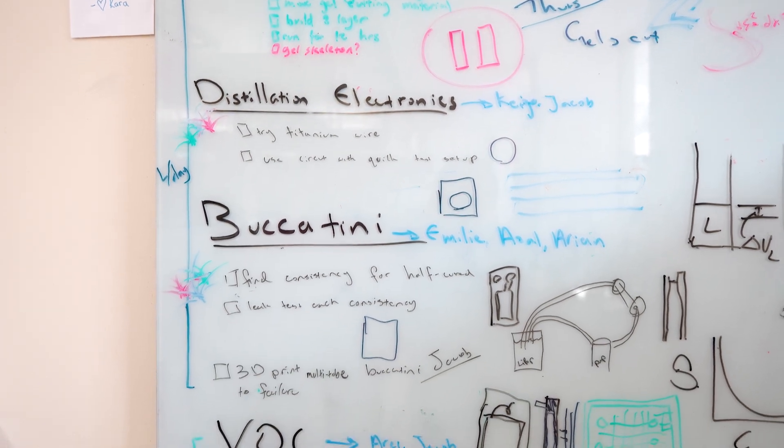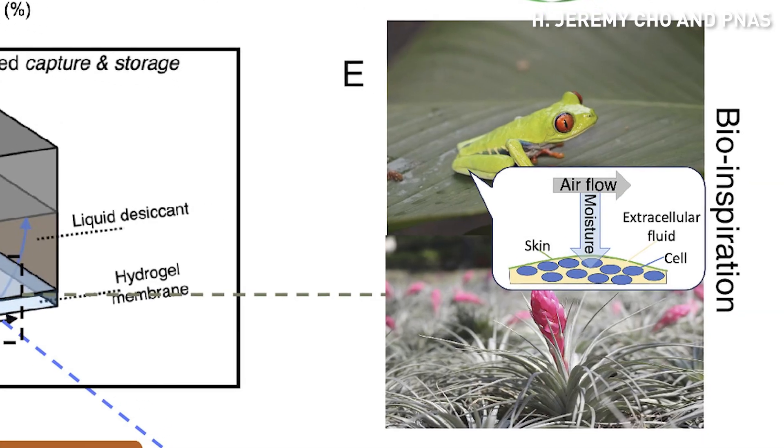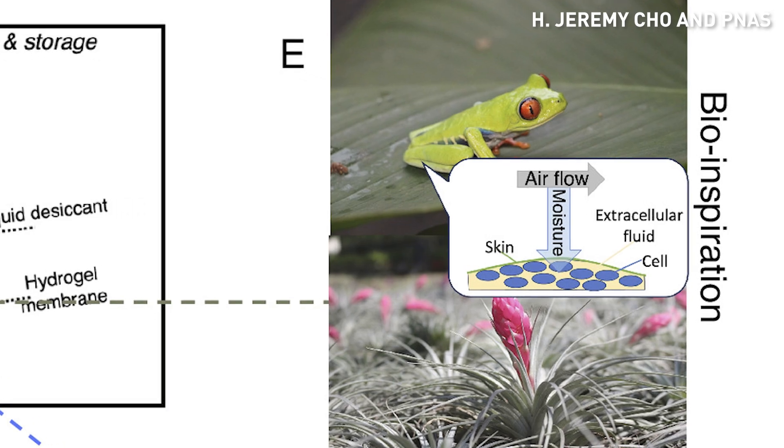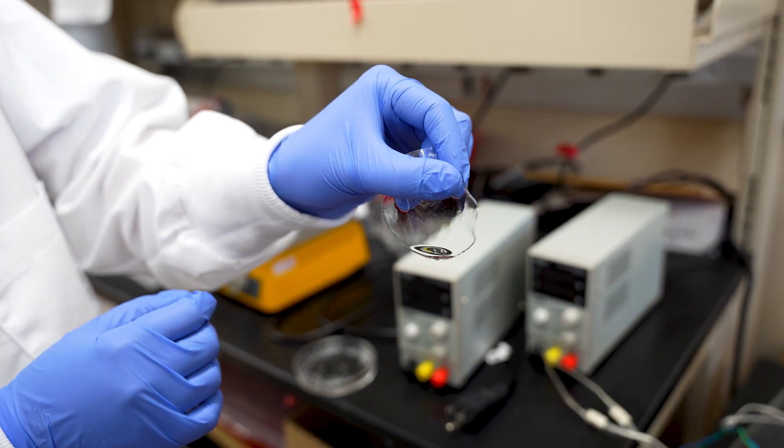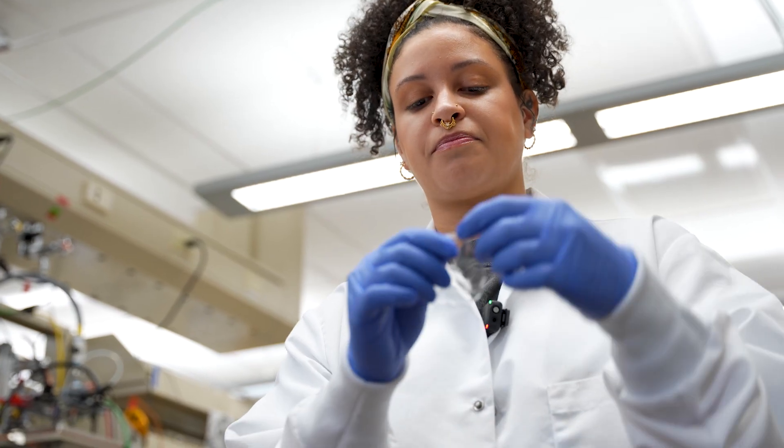We also knew about Australian tree frogs. They seem to hydrate themselves just from the very humid environments that they were in. And we thought, okay, how are they doing that? Well, they have some kind of layer surrounding itself. It's like a skin for the frog.